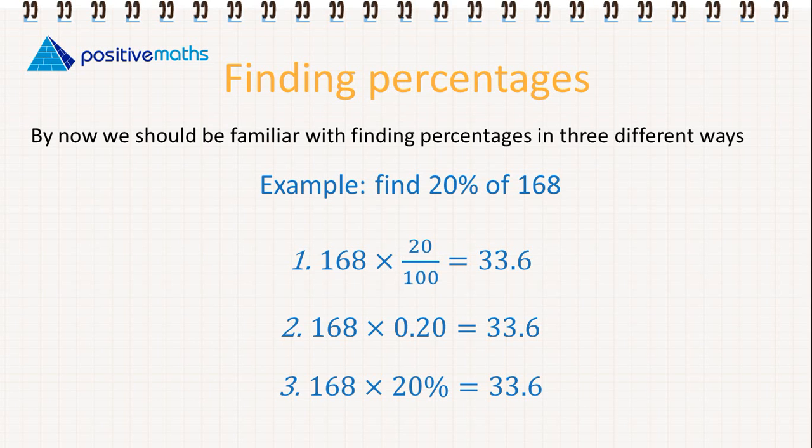The first example we're going to have a look at is just finding 20% of 168. We can find them by using fractions. We're finding 20% of 168 by multiplying 168 by 20 over 100, and this will give us 33.6.